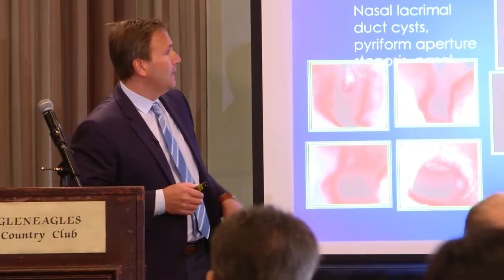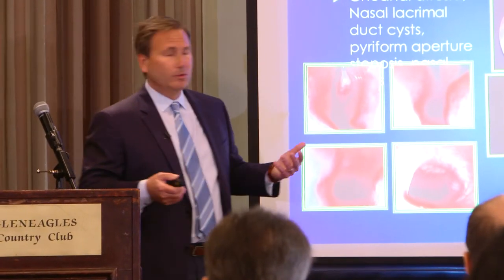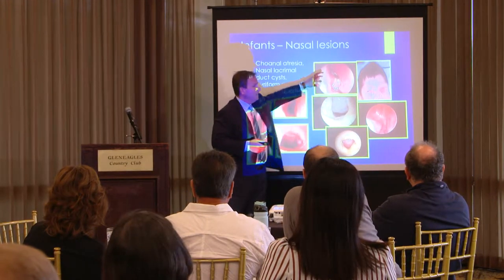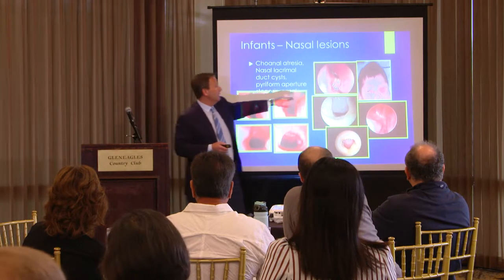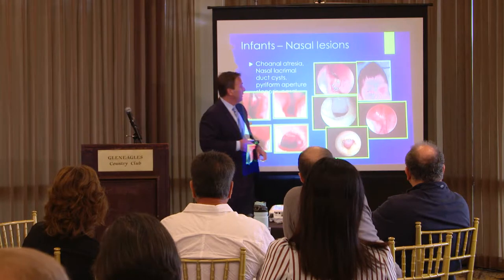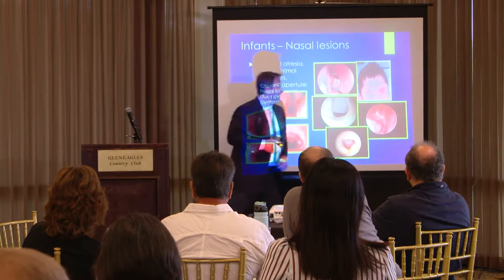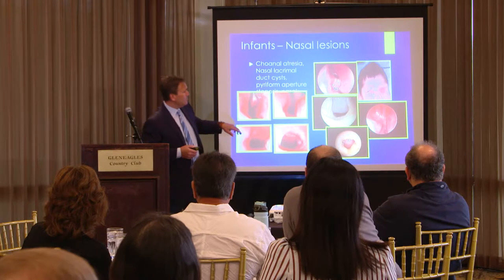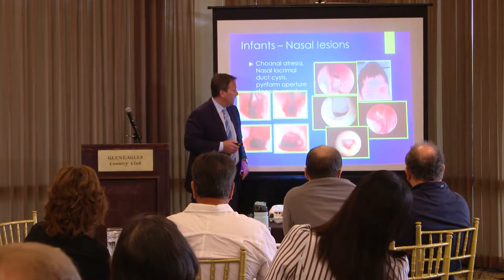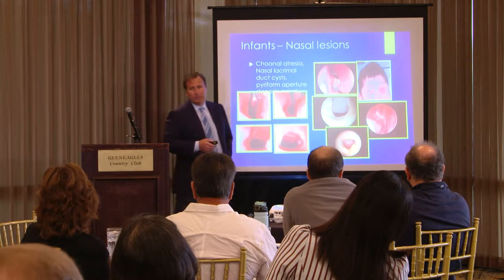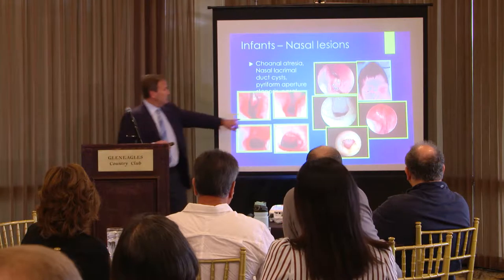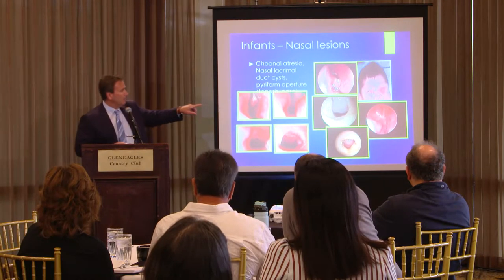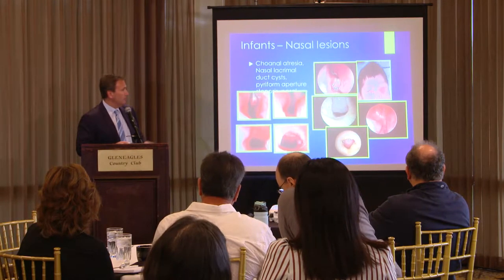The adenoids and tonsils are small at birth, and in infants we look for common causes of obstruction. One example is a nasolacrimal duct cyst — the nasolacrimal system fails to recanalize and forms a cyst that fills the area with fluid, causing obstruction. You can also have tumors such as gliomas or encephaloceles in the nasal cavity, and choanal atresia, where there is complete obstruction.